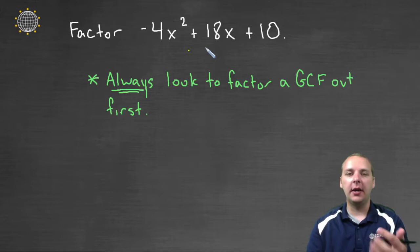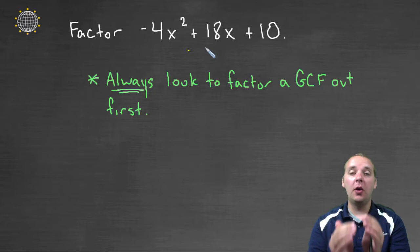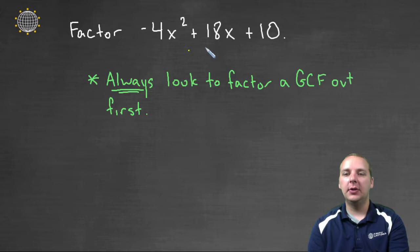Because if it does have any common factors, you can pull those out, and then you're left with a smaller polynomial to factor, if it's not factored completely already. And so that's what we're going to do first in this example, and that's what we're going to do first in every example.